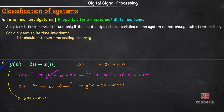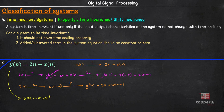This example teaches us the second property of time-invariant systems: for a system to be time invariant, the added or subtracted term should be a constant or zero. For instance, in this example, instead of 2n, if we just had 2 — which is a constant — then the system would have been time invariant. I suggest everyone to pause the video here and try to check the invariance of the system y(n) = 2 + x(n) yourself.